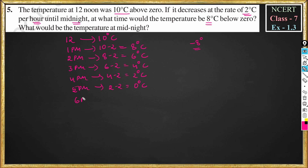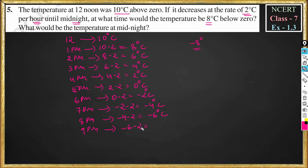At 6 pm temperature will be 0 minus 2, that is equal to minus 2 degree C. At 7 pm it will be minus 2 minus 2, that is equal to minus 4 degree C. At 8 pm this will be minus 4 minus 2, that is equal to minus 6 degree C. At 9 pm temperature is minus 6 minus 2, because each hour temperature is decreasing 2 degrees, so this becomes minus 8 degree C.